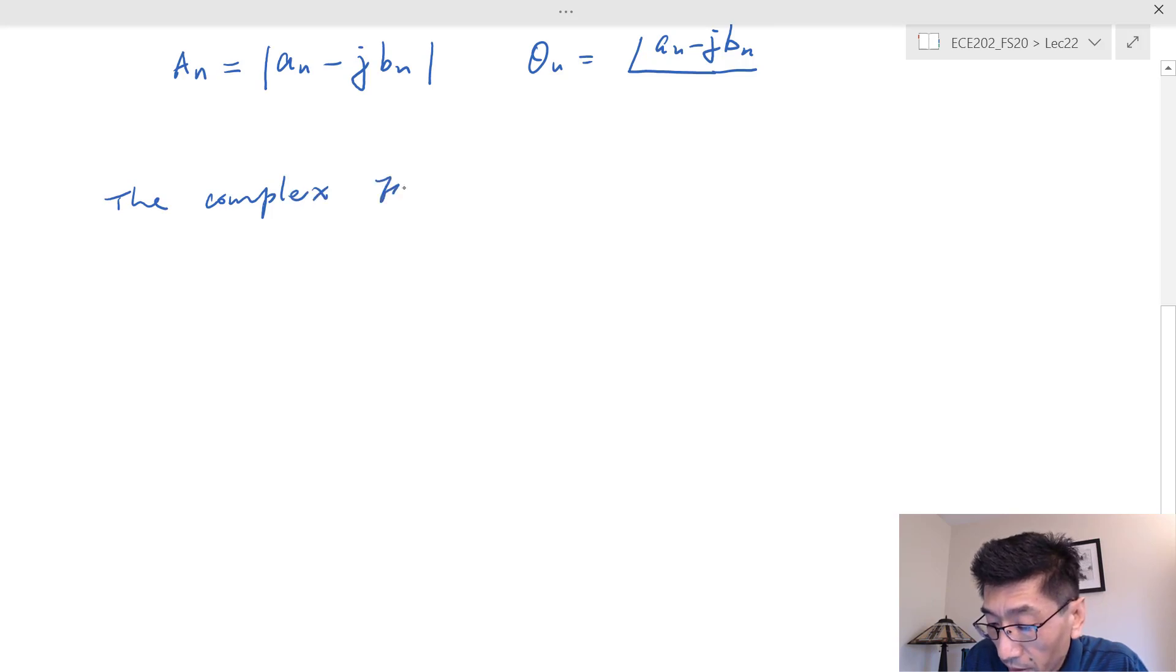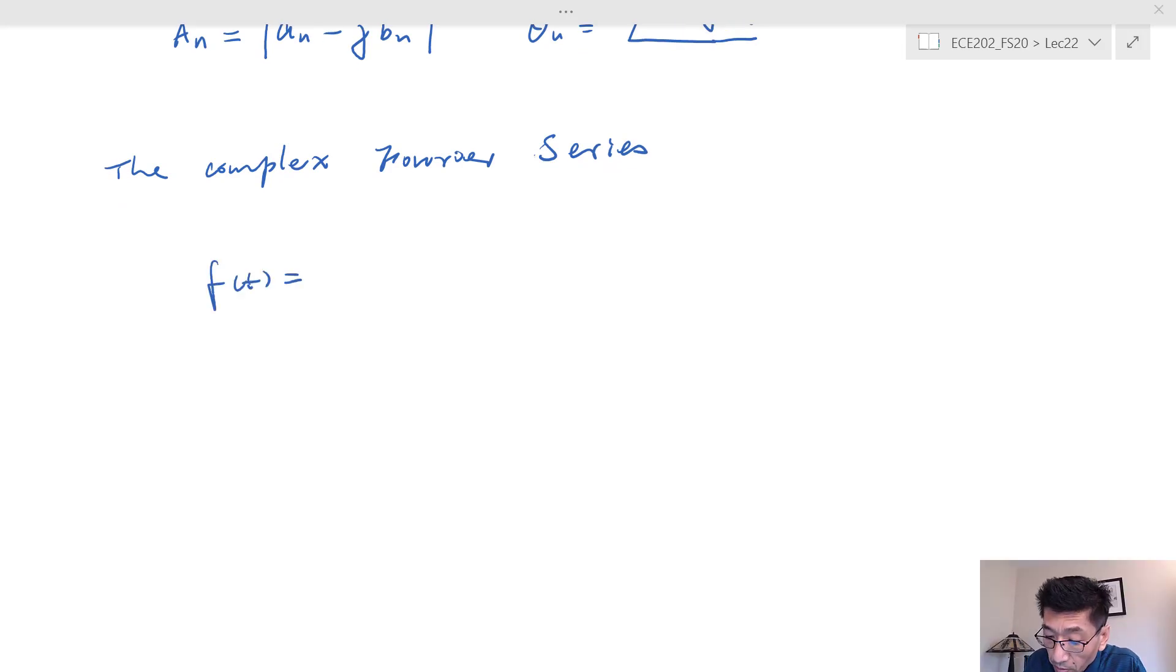The complex Fourier series is really important, especially if you want to prove something. This is really much more compact compared to the real numbers. In complex form, f(x) in the Fourier series is going to be equal to the sum of C_n times e^(j*n*omega*t).